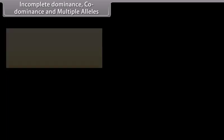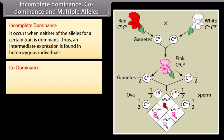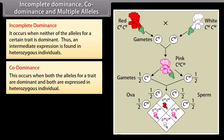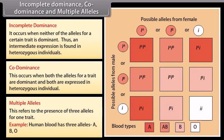Incomplete dominance, co-dominance, and multiple alleles. Incomplete dominance occurs when neither of the alleles for a certain trait is dominant, so an intermediate expression is found in heterozygous individuals. Co-dominance occurs when both alleles for a trait are dominant and both are expressed in the heterozygous individual; such a phenomenon can be observed with multiple alleles. Multiple alleles refers to the presence of three or more alleles for one trait — for example, human blood type has three alleles: A, B, and O.